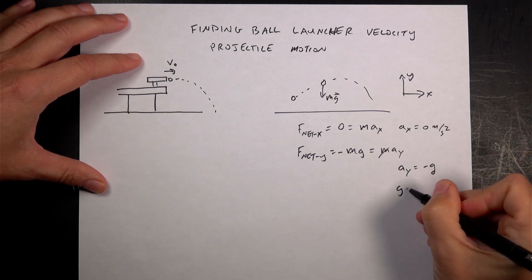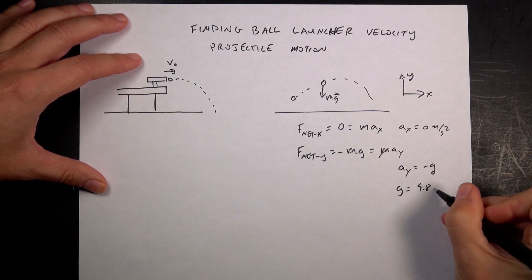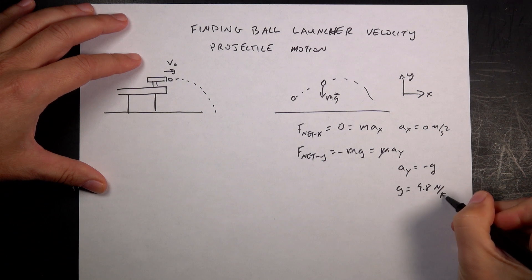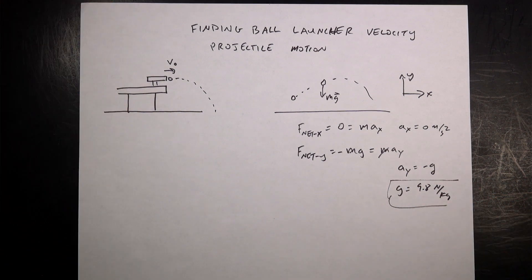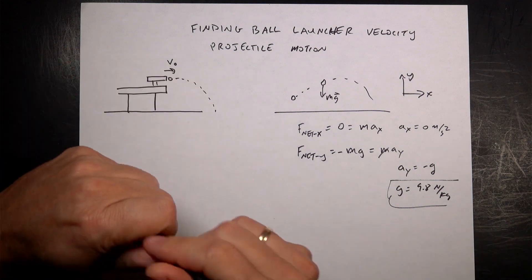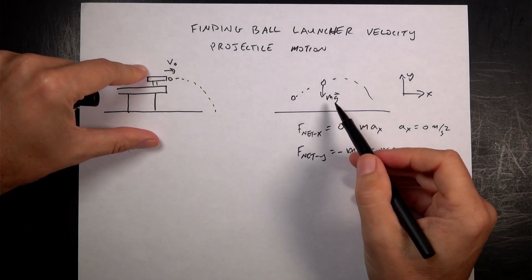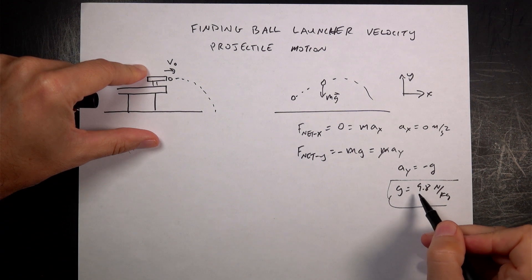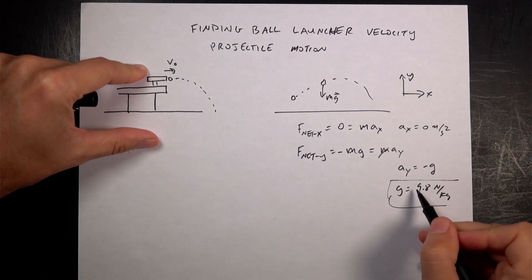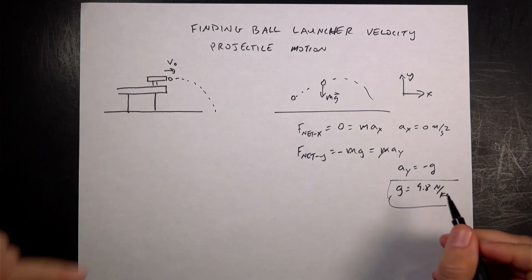We say g is 9.8 newtons per kilogram. Don't say negative g — it's not negative. The negative is the y component, but g itself is just the magnitude of that gravitational field, so don't put a negative there.